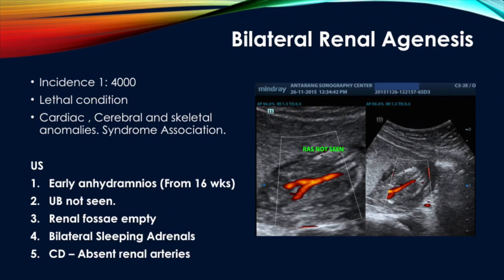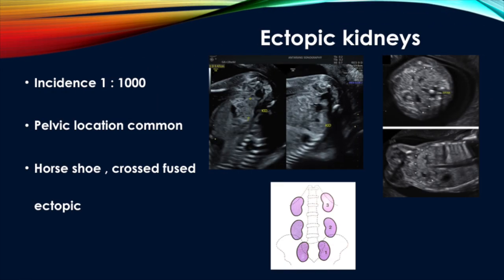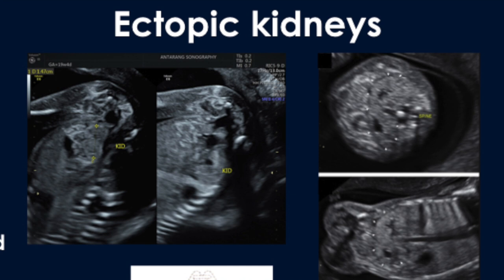Bilateral renal agenesis is a lethal condition associated with cardiac, cerebral, and skeletal anomalies. On ultrasound we see early anhydramnios from 16 weeks onwards, the bladder is not seen, renal fossae are empty, there are bilateral sleeping adrenal signs, and on color Doppler the renal arteries are absent. Embryologically, kidneys form in the pelvis and ascend to the normal position; failure to ascend leads to ectopic kidney, with pelvic location being most common — the kidney is seen close to the bladder. Horseshoe and cross-fused ectopic kidneys are fusion anomalies detectable antenatally.